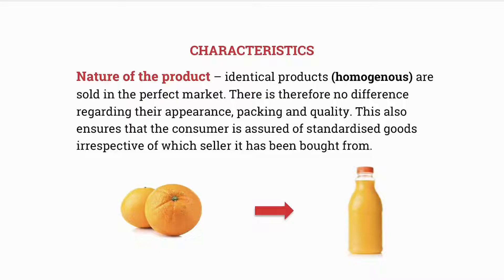Let's unpack some of the characteristics of the perfect market. We are not going to go through all the characteristics — instead we're just going to focus on some of them so that you have a better understanding. The first characteristic we are going to consider is the nature of the product. In the perfect market, homogeneous goods are sold. Homogeneous goods are ones that are identical in appearance, packaging, and quality.